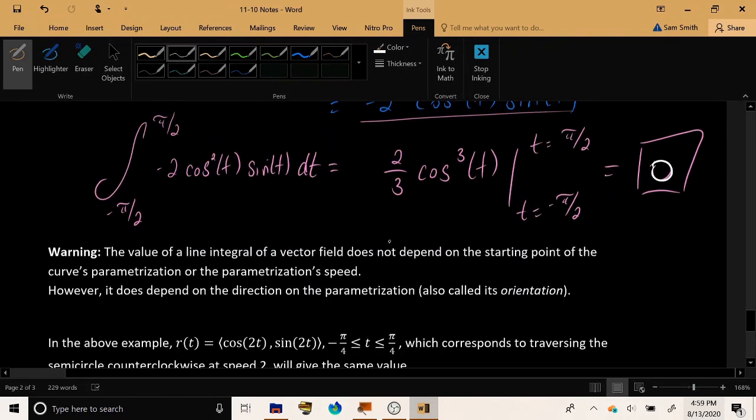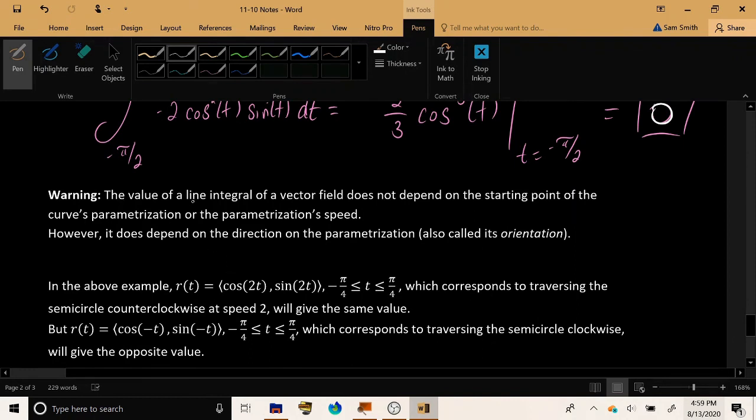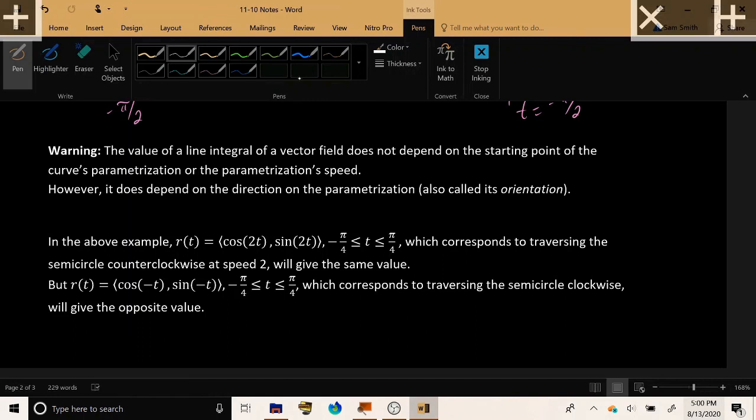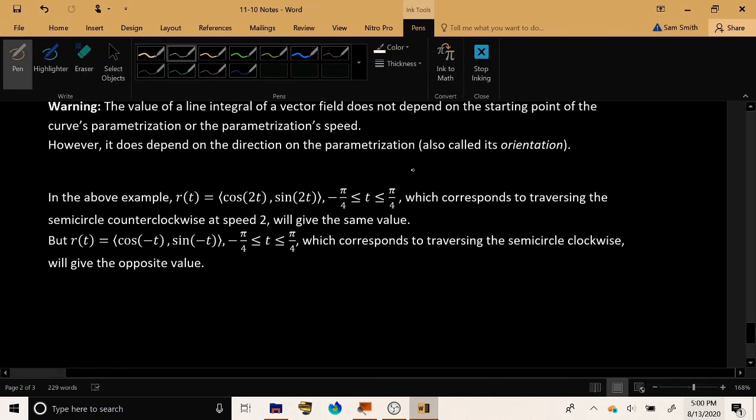All right, now just as a friendly warning, the value of a line integral of a vector field, it doesn't depend on the starting point of the curve's parameterization, it doesn't depend on the parameterization speed, you can more or less choose any parameterization you want. But, be careful and make sure that your parameterization for the curve that you are given respects the orientation of the curve that you're given. It has to traverse the path in the correct direction. So you have to be careful about that.